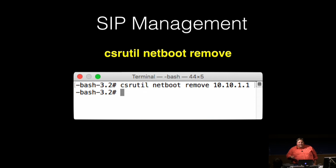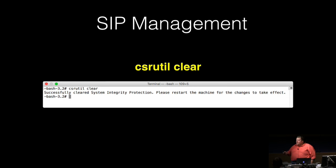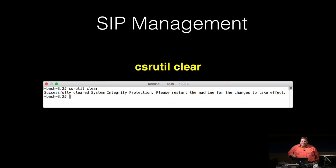When booted from recovery, you can also remove NetBoot servers from the whitelist using csrutil netboot remove followed by the IP address. There is also csrutil clear, which resets SIP and clears the NetBoot whitelist. After a reboot, SIP is enabled if it wasn't previously, and running csrutil netboot list will show that no NetBoot IPs are listed.